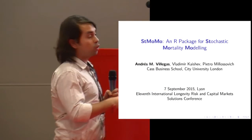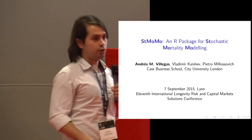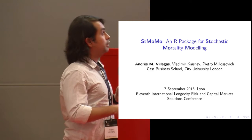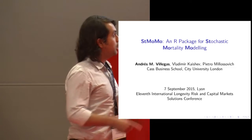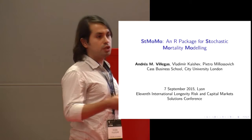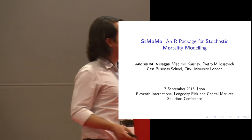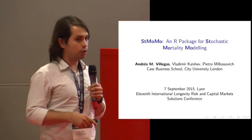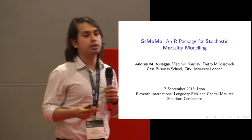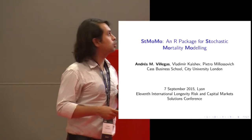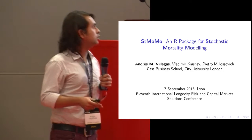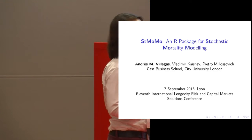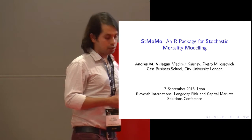I'm going to speak about StMoMo, which is an R package for stochastic mortality modeling. This is a joint work between Vladimir Kashev, who is here, and Pietro Milosevic, who presented earlier this morning. This is a spin-off of that project, and since we had to do testing of so many models, we thought that the actuarial science community and the demographic community would benefit from the code we use for that, so we tried to make it available through an R package.